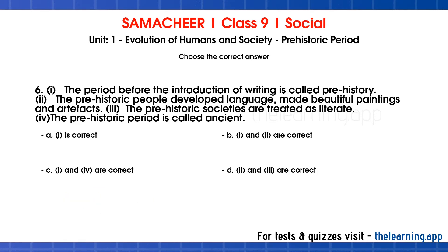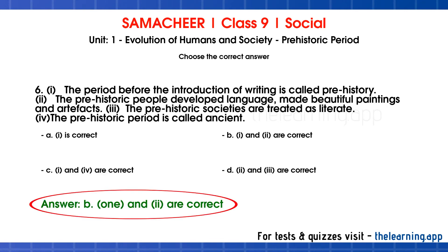Sixth question — evaluate the statements. First: the period before the introduction of writing is called prehistory. Second: the prehistoric people developed a language, made beautiful paintings and artifacts. Third: the prehistoric societies are treated as illiterate. Fourth: the prehistoric period is called ancient. The correct answer is Option B — the first and second statements are correct.